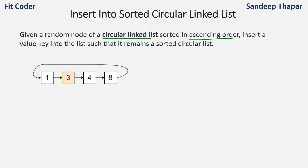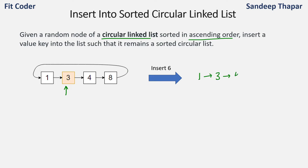We are given a random node — here we are given a pointer to node 3. We need to insert 6 into this list. The output for this linked list will be that 6 comes after 4. So we need to find the appropriate location at which we can insert the new value.